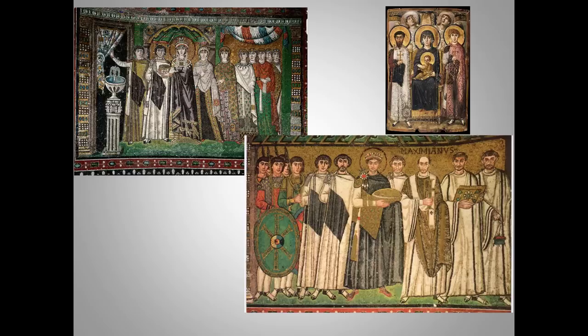Remember, church and state were not separated in Byzantine Europe, and art was often intended to bolster imperial power. But the figures on the icon are the Virgin, St. Theodore, and St. George — there are no emperors surrounding the Virgin's throne.